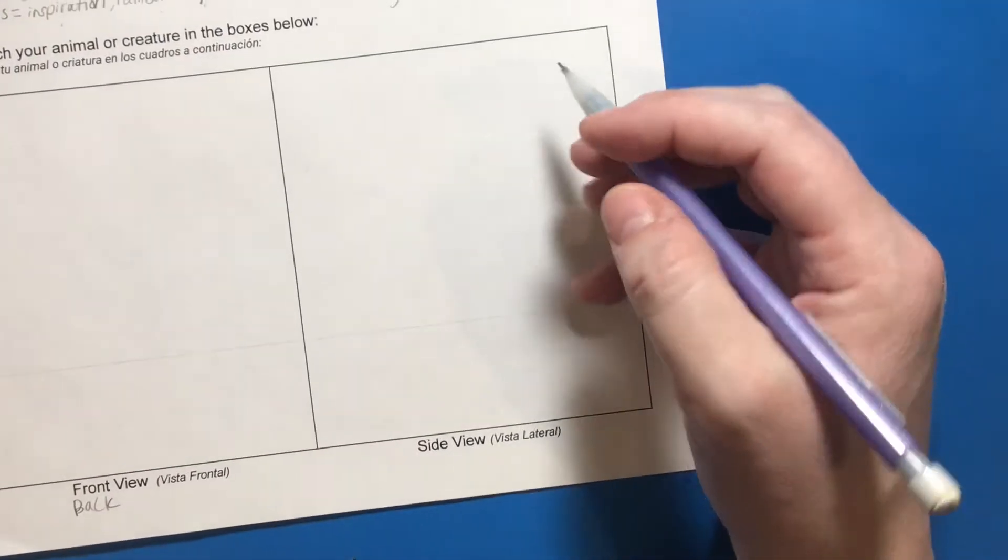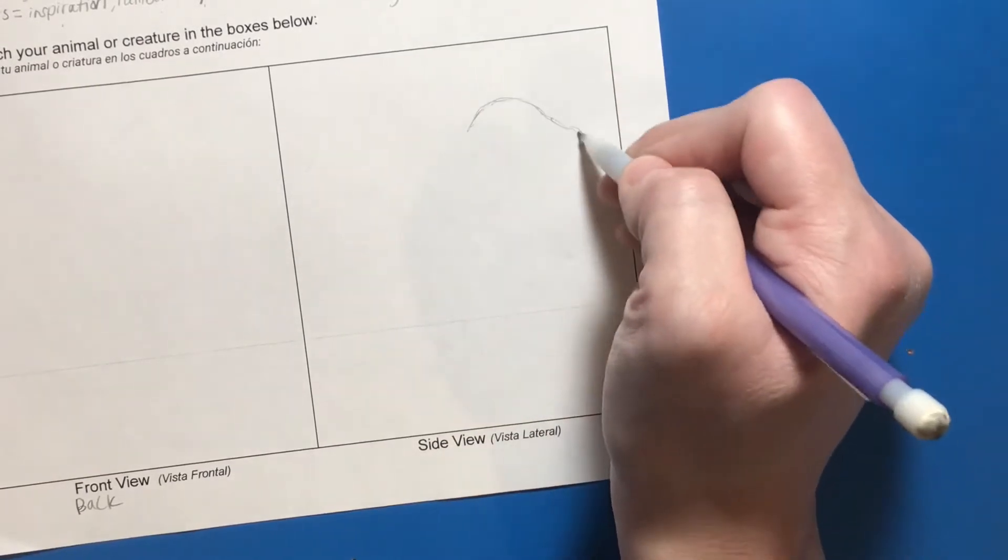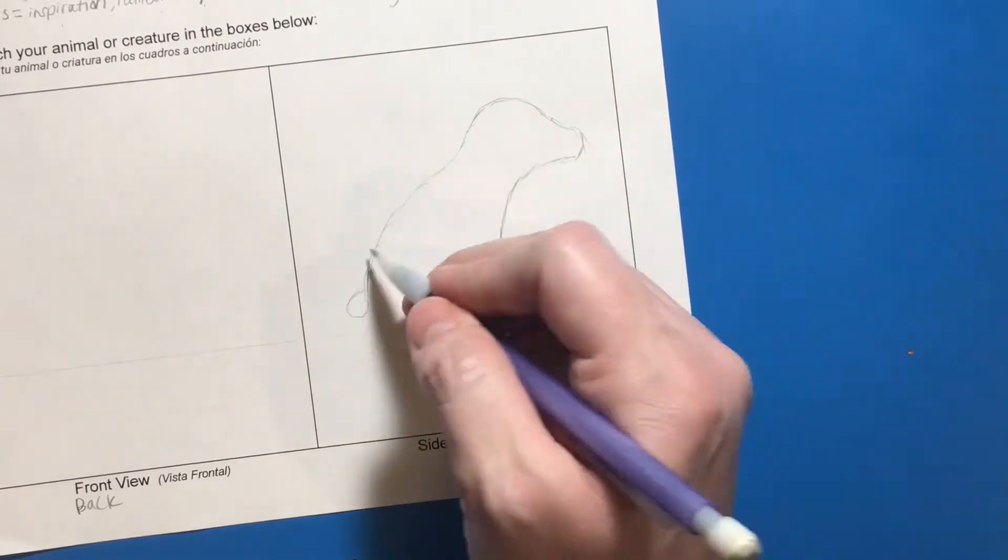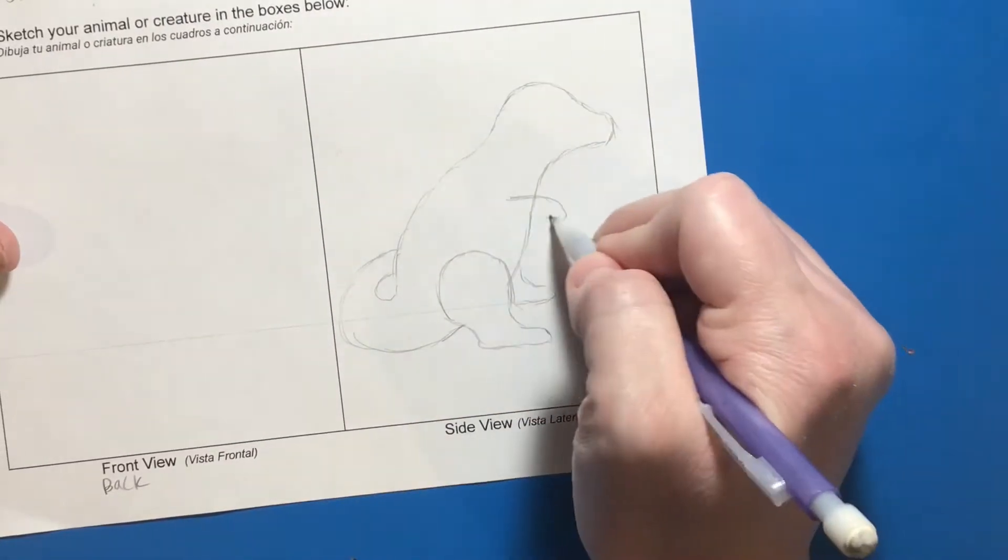So for my creature, I'm going to just start to sketch kind of the shape that I was thinking. I found it easiest to sketch my creature from the profile first, and then as I was sketching I thought about the general body shape.